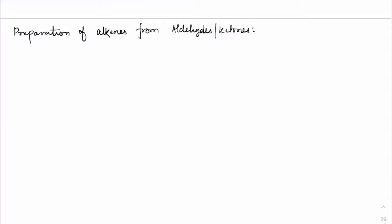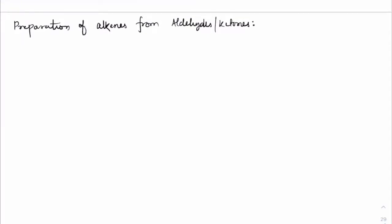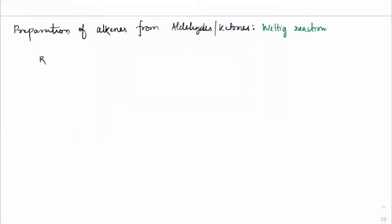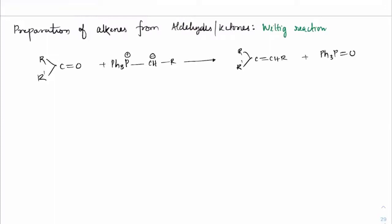Today we will study the preparation of alkenes from aldehydes and ketones. This is known as the Wittig reaction. If we take any C=O group — an aldehyde or ketone — and react it with triphenylphosphine connected with CH and R, that gives us R'C=CHR plus Ph₃P=O, which is triphenylphosphine oxide.